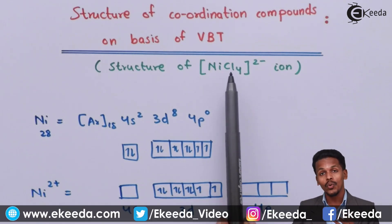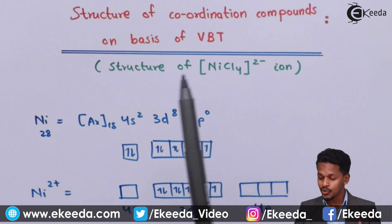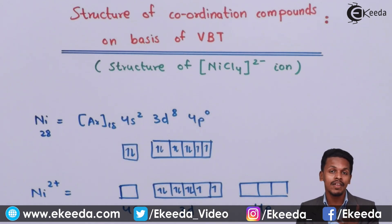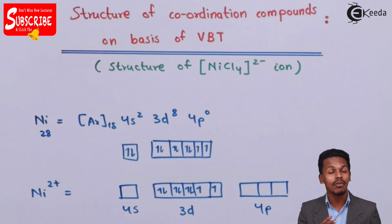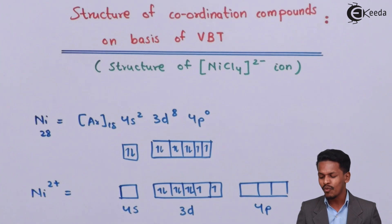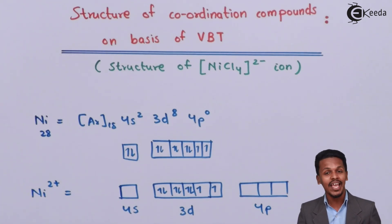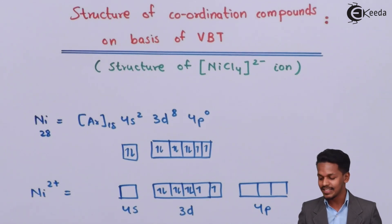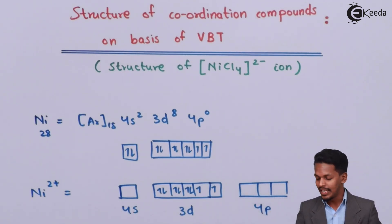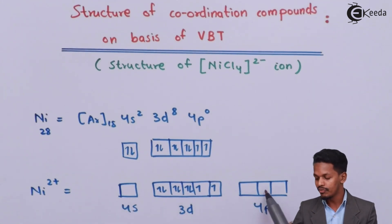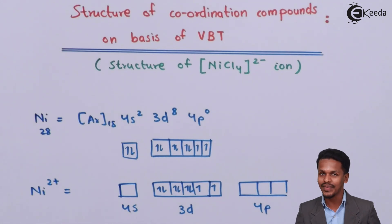There are 4 chlorine atoms approaching the nickel, and they will form coordinate covalent bonds with it, resulting in formation of the complex. For that we need 4 vacant orbitals. We already have 4 vacant orbitals — the 4s and the 4p subshell — giving us 4 empty orbitals in total.